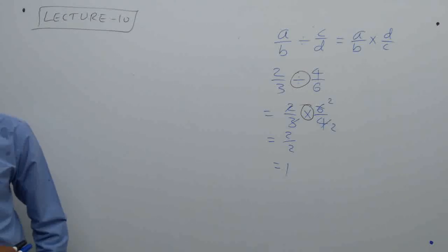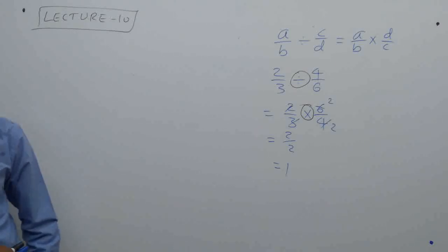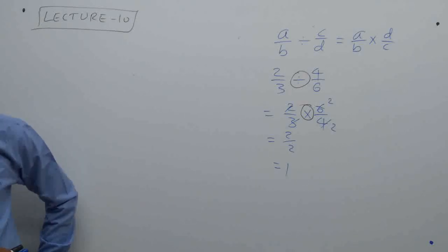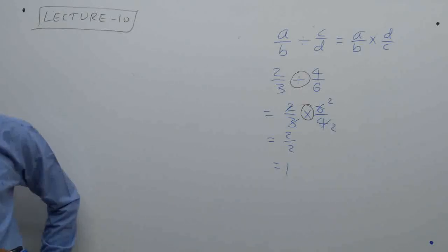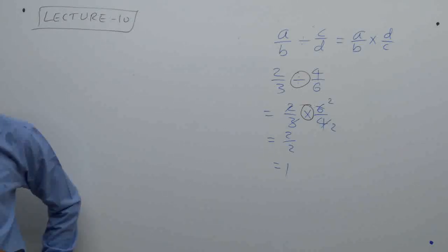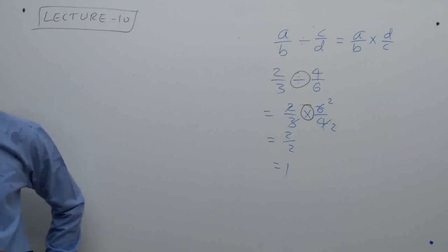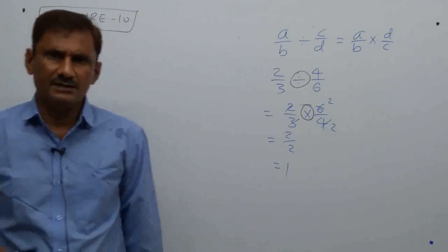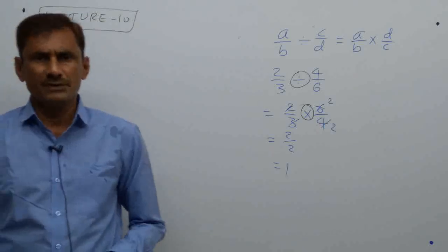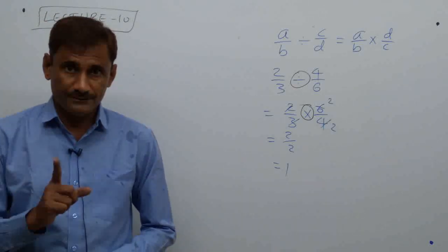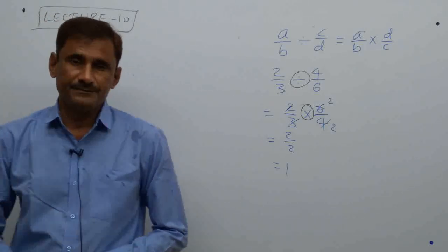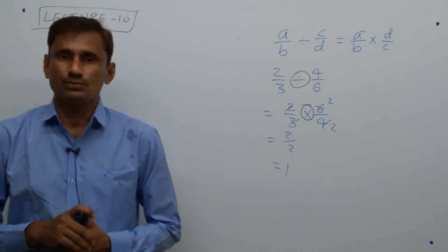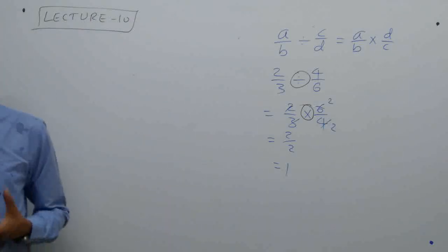For example, 2/3 divided by 8/6 — after inverting and multiplying — gives 1/2, which is a rational number. So the result stays within the rational number set. In standard 8, the biggest set we have is the set of rational numbers Q.